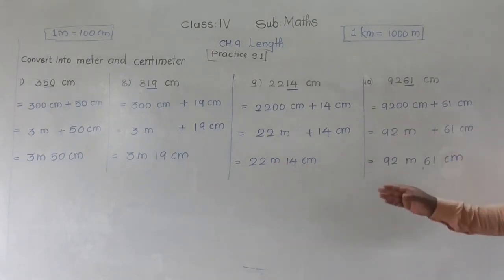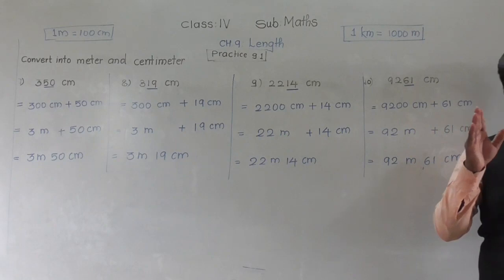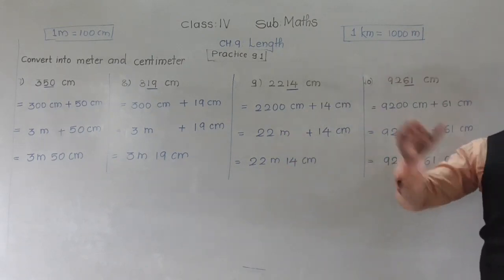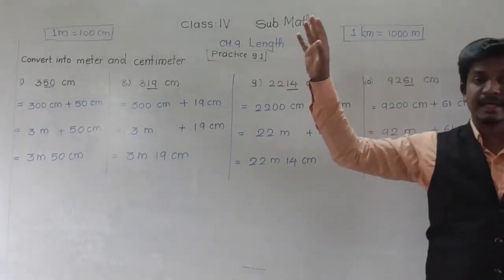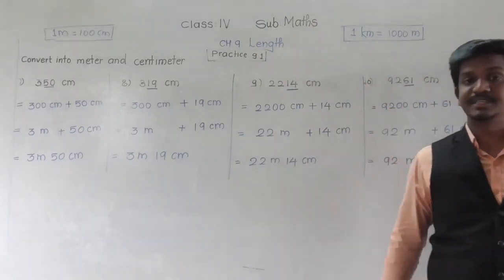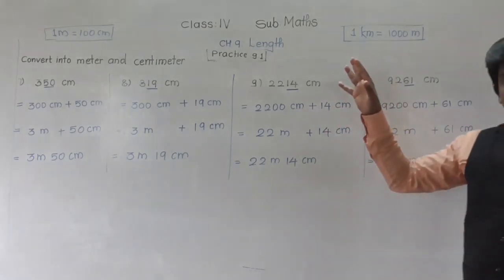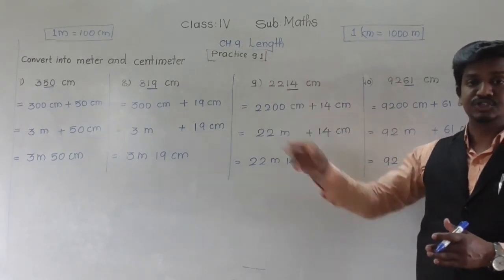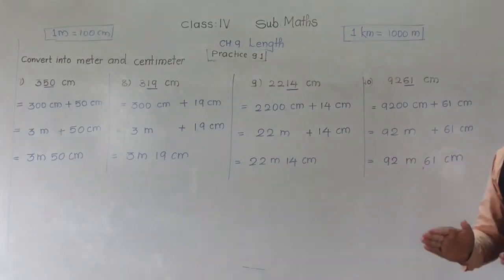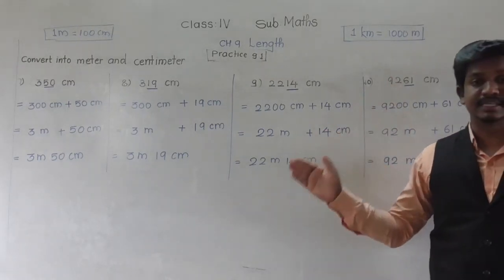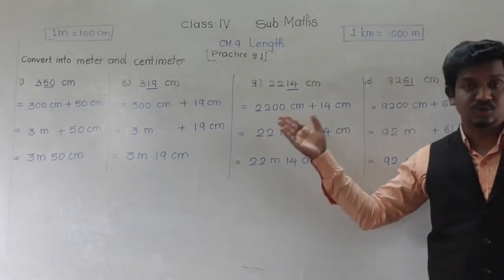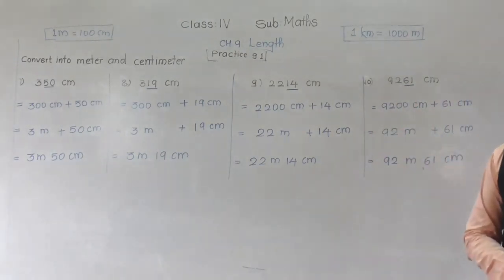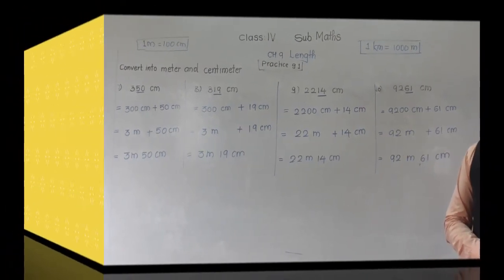So in this way we can convert meters and centimeters into complete centimeters, or the opposite — when length is given in centimeters we can split it into meters and centimeters. Watch this video very carefully, understand both conversion methods, and solve the remaining examples in this question by yourself to check whether you have understood the concept. Thank you for today and have a nice day.